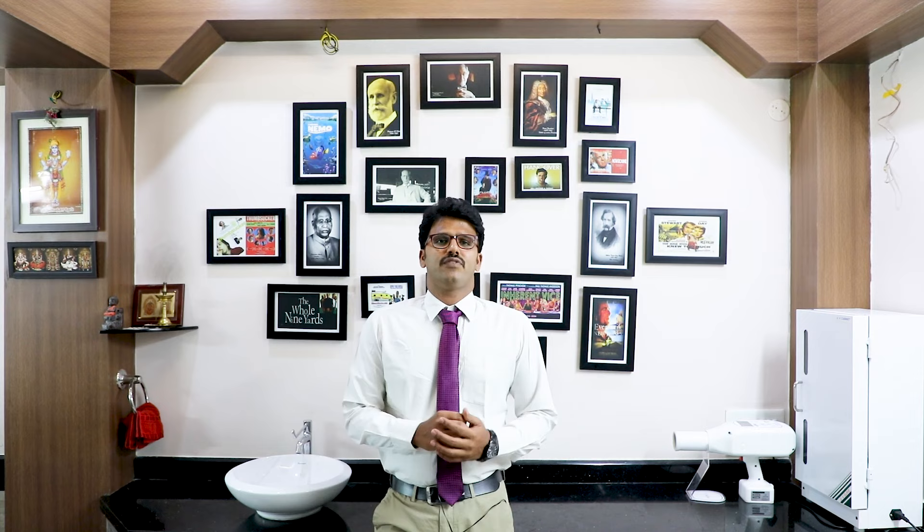It can either be a soft tissue impaction, in which your third molars are covered entirely by your gums, or it can be a hard tissue impaction, in which the third molars are covered by bone. If the impacted tooth is straight, it is called a vertical impaction. If it is slanting one way, it is called a mesioangular impaction. If slanting the other way, it is a distoangular impaction. And if the tooth is lying horizontally, it is called a horizontal impaction.